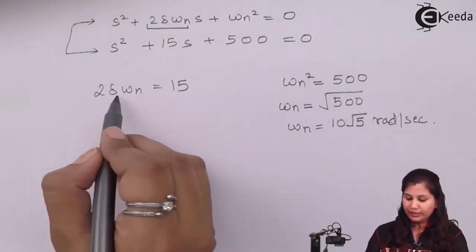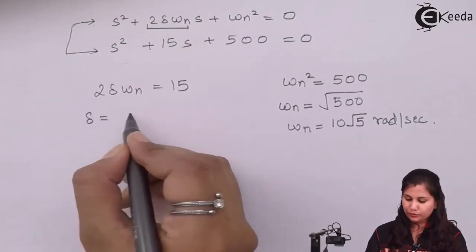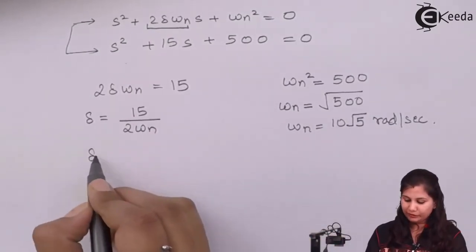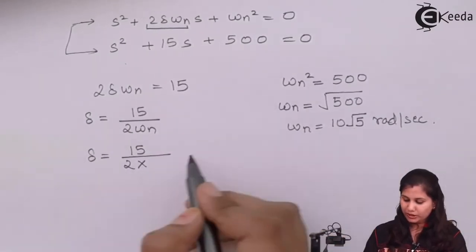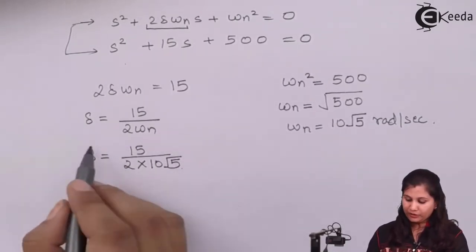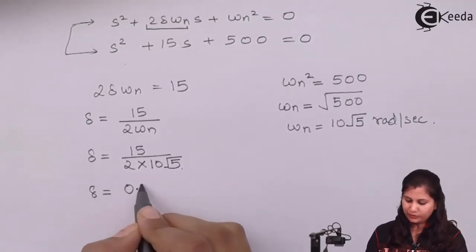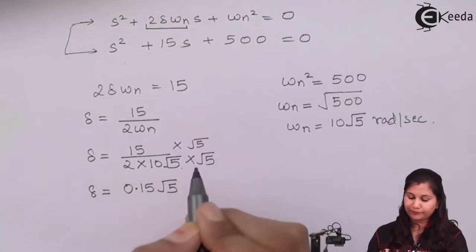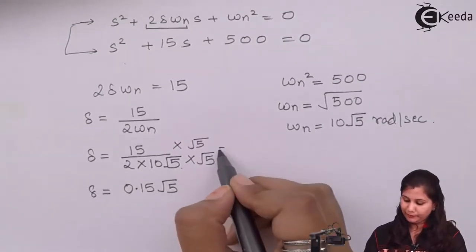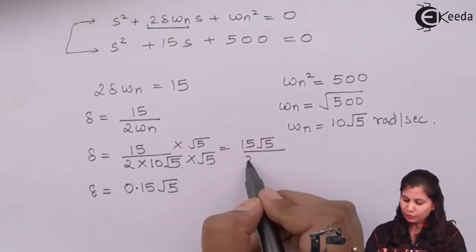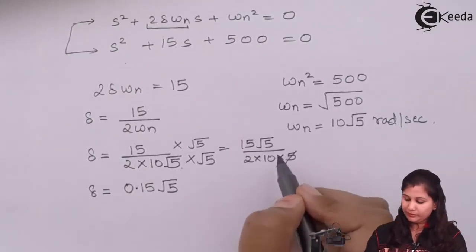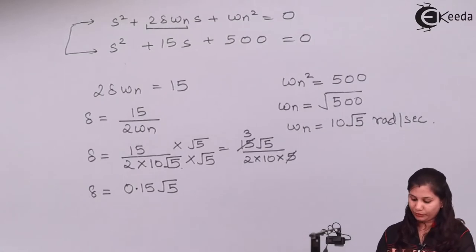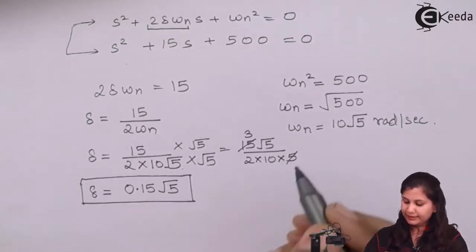Since 2δωn equals 15, we get δ equals 15 divided by (2 × 10√5). Simplifying by multiplying numerator and denominator by √5, we get 15√5 upon (2 × 10 × 5), which gives δ equals 0.15√5. So this is the value of the damping ratio δ and ωn equals 10√5 radians per second.